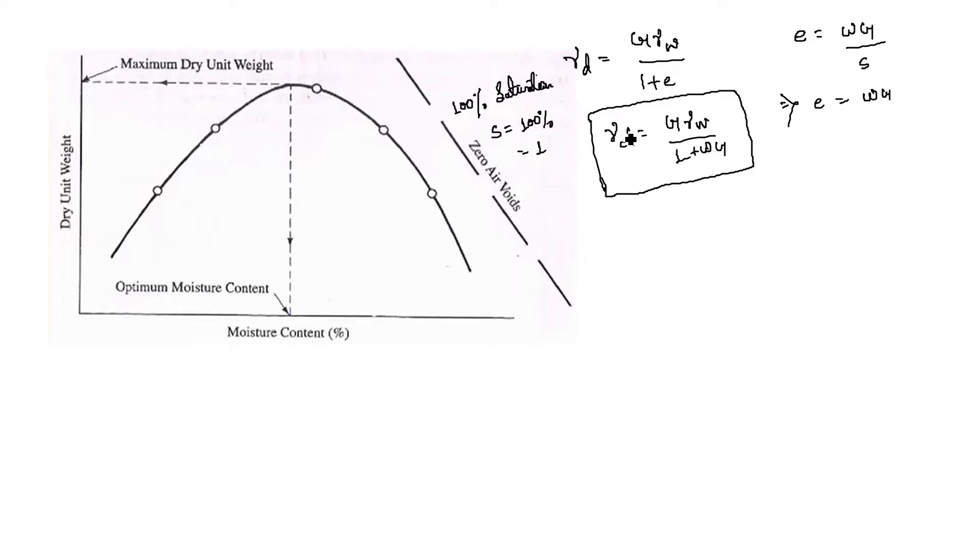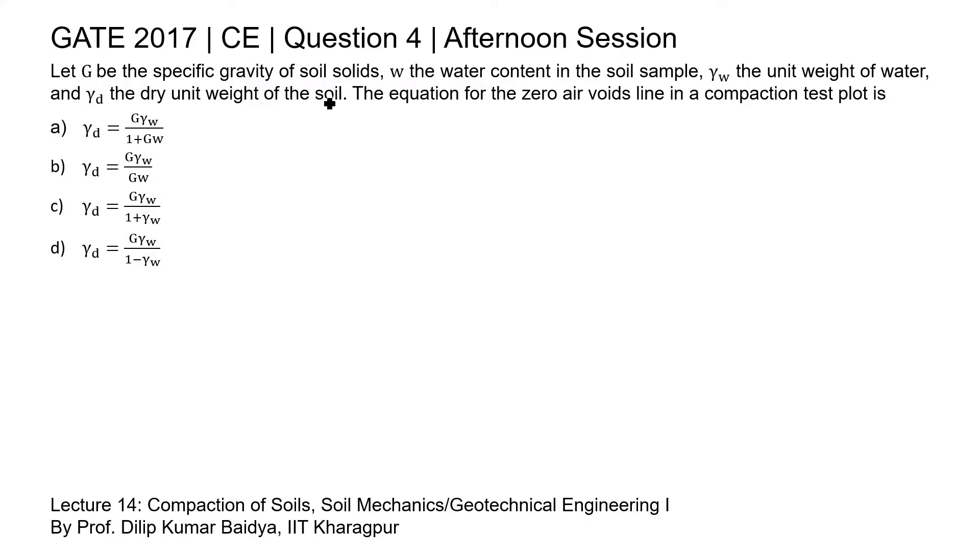The equation of this zero air void line may be written as gamma D equals G gamma W divided by 1 plus WG. Looking at the four options, the correct equation is option A: gamma D equals G gamma W divided by 1 plus GW. Therefore, option A is the correct answer. Thank you.